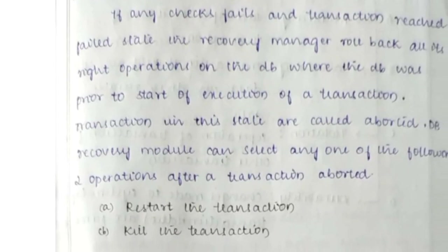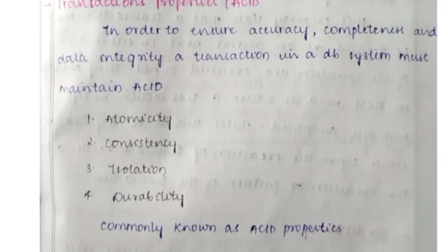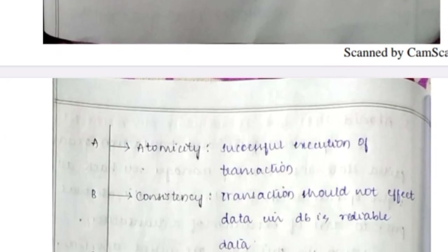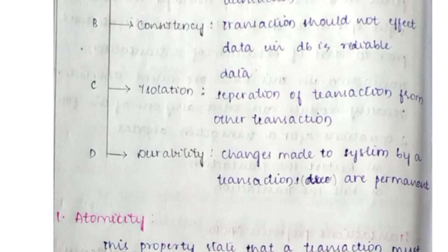The most important concept in unit number four is ACID properties — that is Atomicity, Consistency, Isolation, and Durability. What is meant by atomicity? This property states that the transaction must be treated as an atomic unit — that is, either all its operations are executed or none of them are.